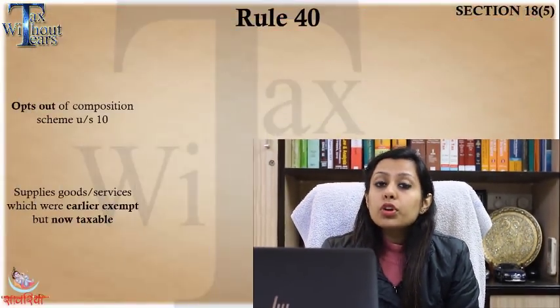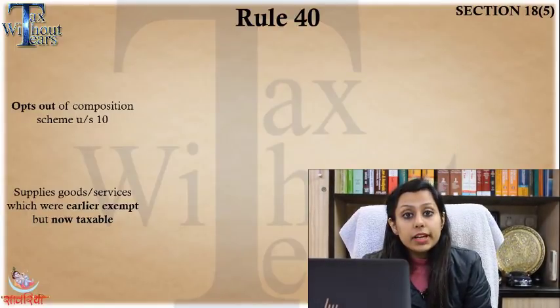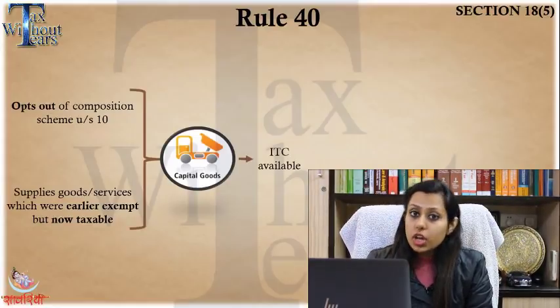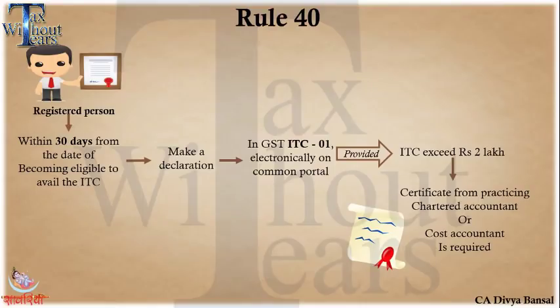Rule 40 says that when you opt out of the composition scheme, or you were earlier supplying exempt goods but they have now been made taxable, the ITC shall be available to you. For capital goods, the ITC will be the tax paid on the capital goods minus 5% per quarter of a year or part thereof. For inputs and input services, whatever stock is lying with you, you can claim the credit of the same. But if the ITC you need to avail exceeds rupees 2 lakh, you also need to obtain a CA certificate or a cost accountant certificate.